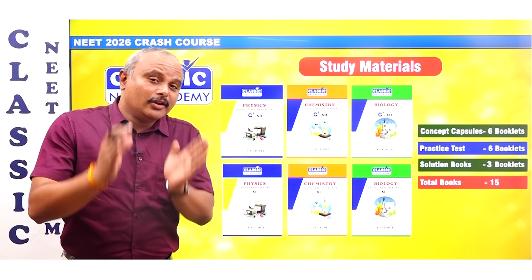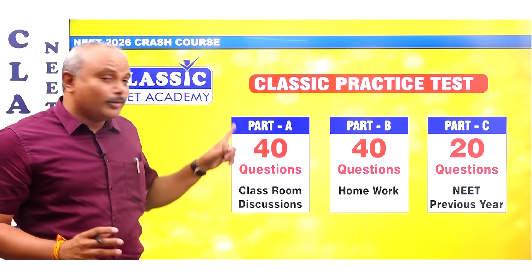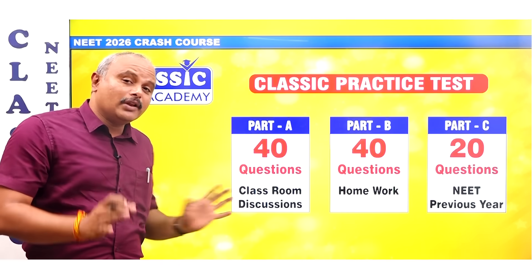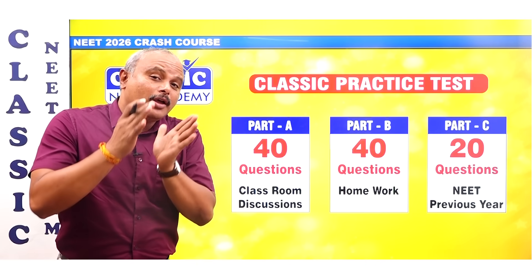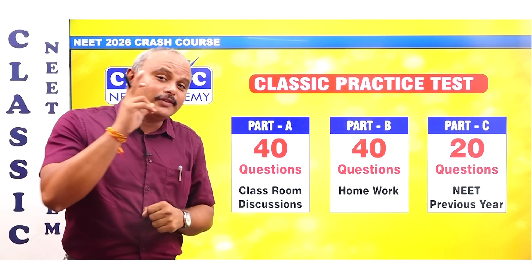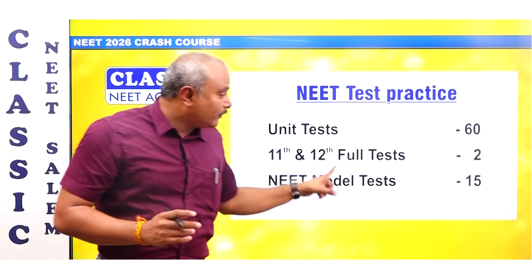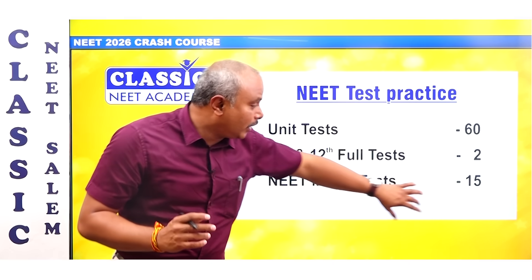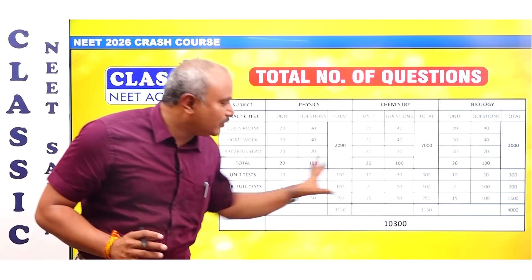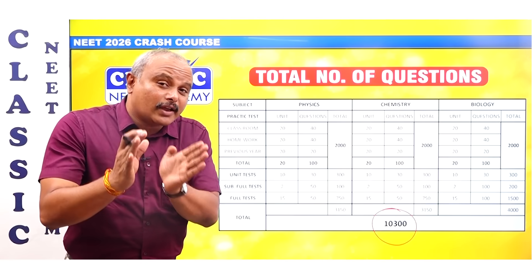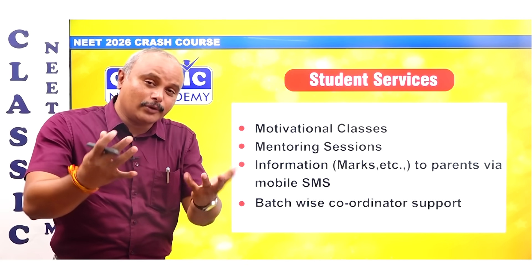We will give you tests for English and Tamil medium students. In each unit, we will give you a classroom discussion and a test based on previous year questions. There is a unit test in physics. After completing all units, there is a full test — a NEET model exam, 15 in total. In statistics and biology, you will cover everything in physics.